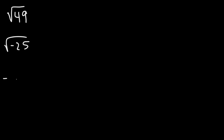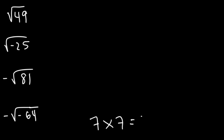Consider these four examples. Let's start with the first one: what is the square root of 49? What two identical numbers when multiplied will give you 49? 49 is 7 times 7, so it turns out that the square root of 49 is 7.